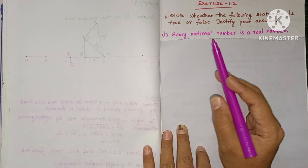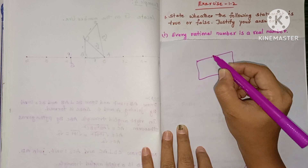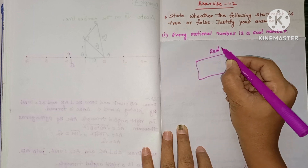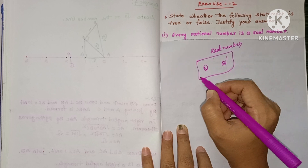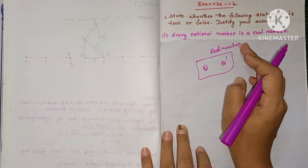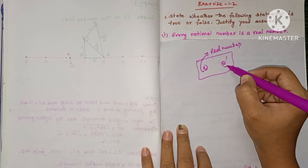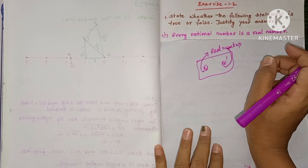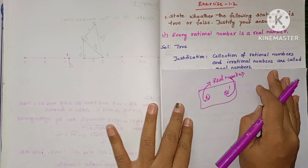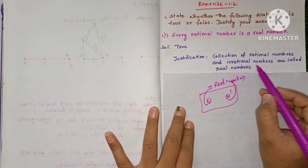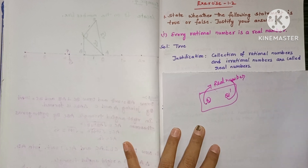First statement: every rational number is a real number. Real numbers means both rational and irrational. So every rational number is a real number and every irrational number is a real number — this is TRUE. Justification: the collection of rational numbers and irrational numbers together are called real numbers.